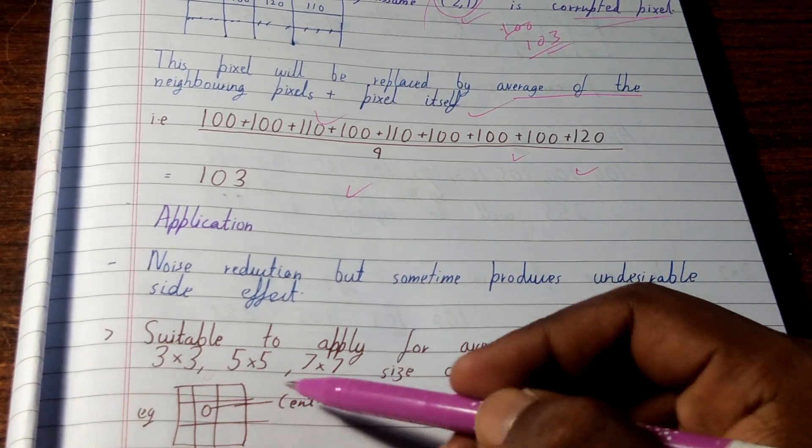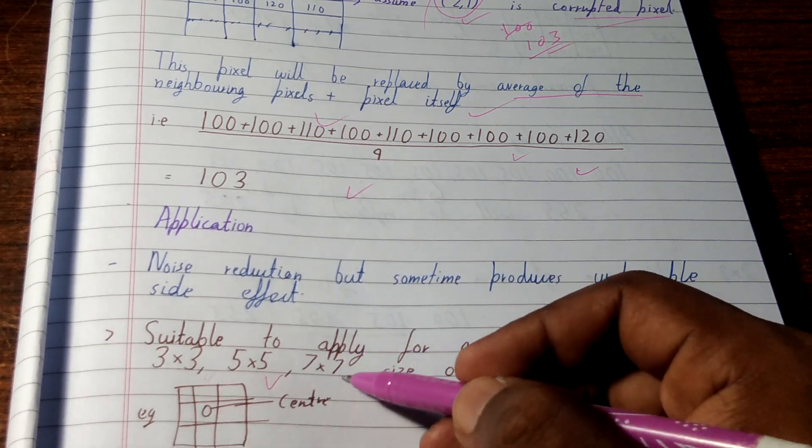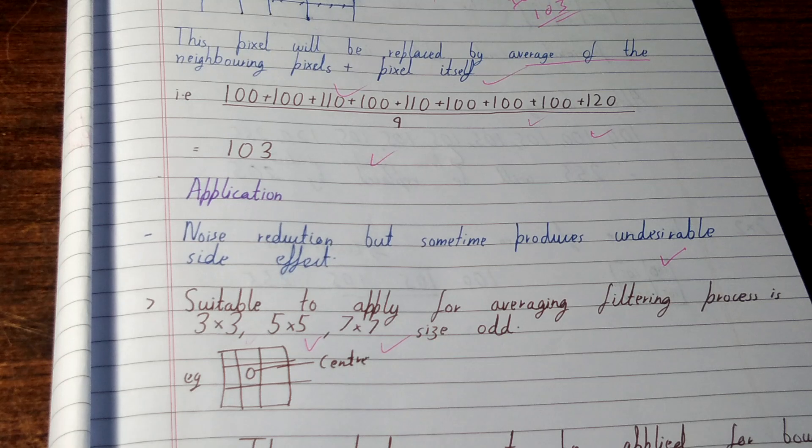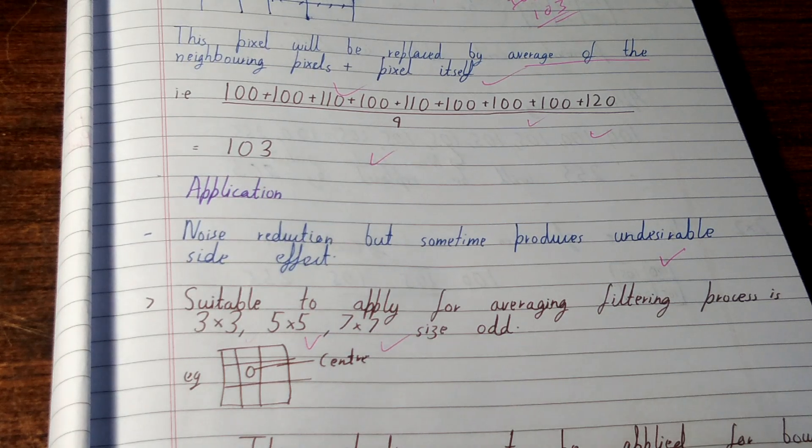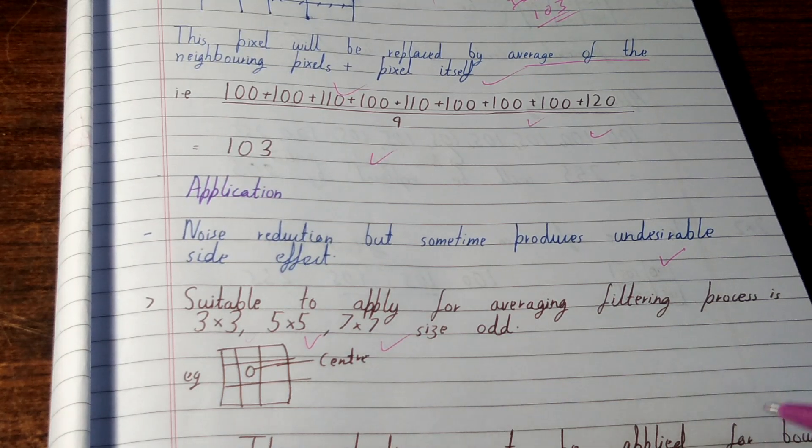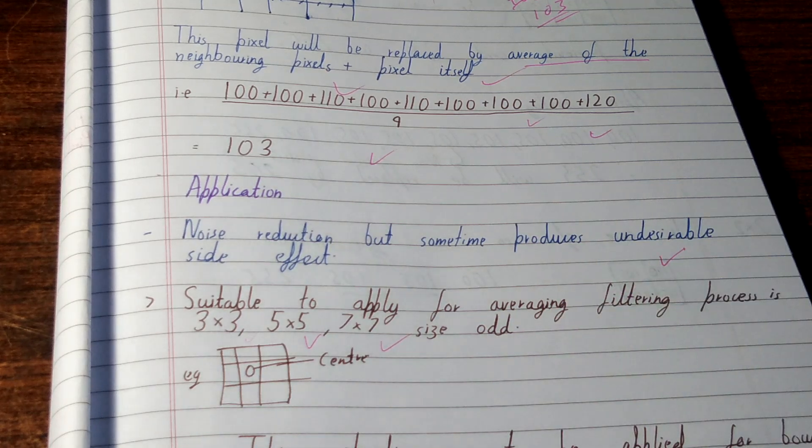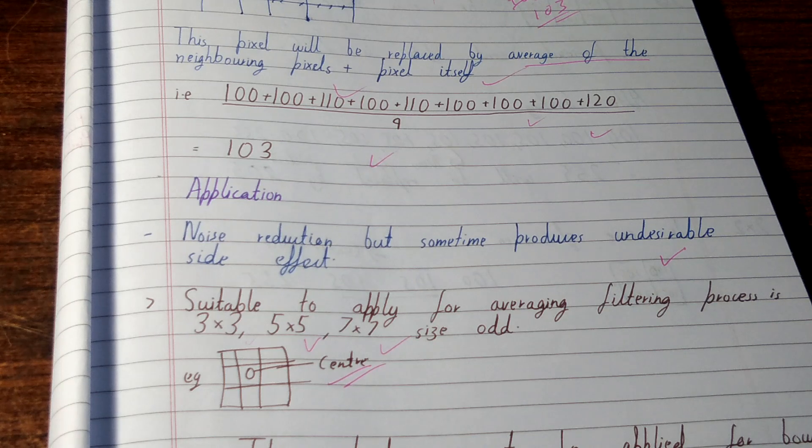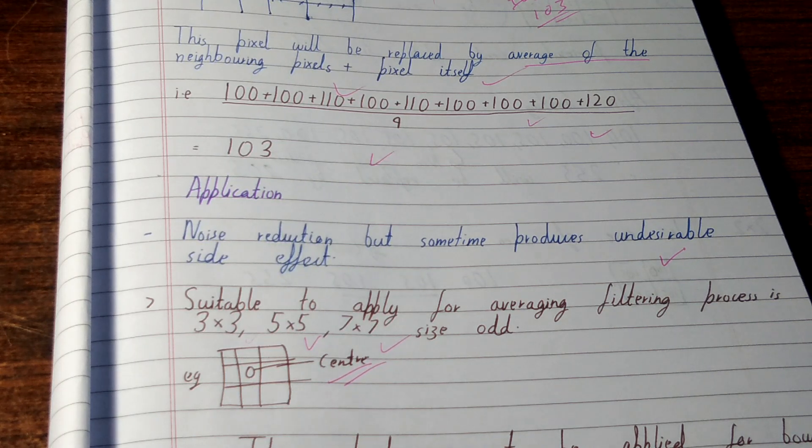So it is suitable in the case if we have a three cross three matrix, five cross five matrix, or seven cross seven. So you need to have an odd size matrix, then it is more suitable. And the pixel that is corrupted should be in center, or you can say it should have all the neighbors, all eight neighbors, then only you can take it out.